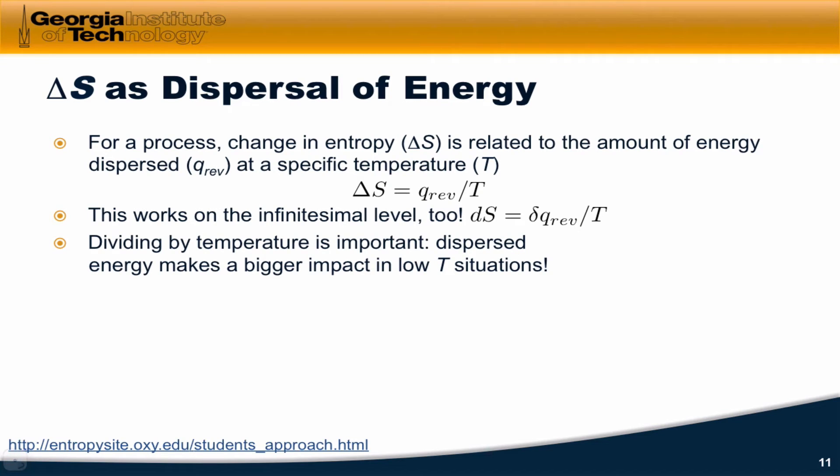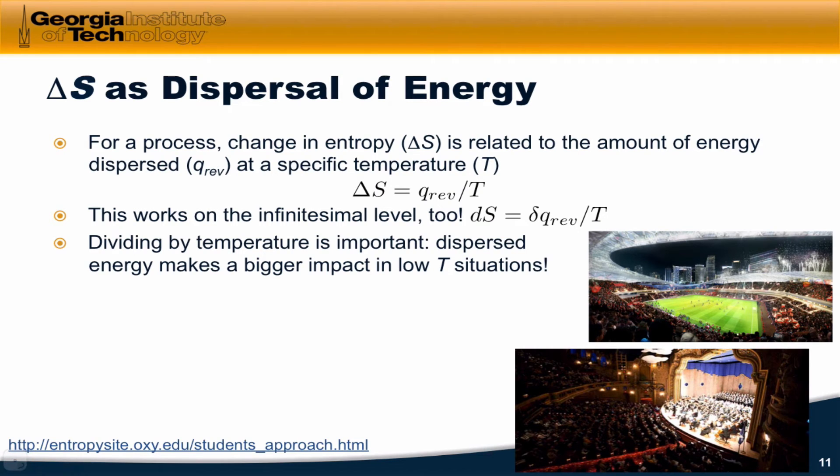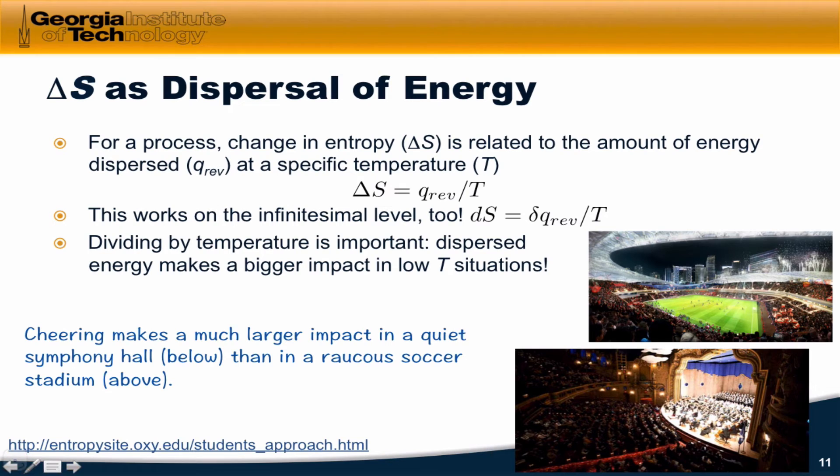Here's an analogy that can help us understand this idea. Consider a soccer stadium versus a symphony hall. The soccer stadium is very loud and raucous. The symphony hall, very quiet and subdued. Think about the impact that loud cheering makes in both situations. Loud cheering makes a much larger impact in a quiet symphony hall than in a raucous soccer stadium. If the level of cheering is the same, it's going to have a much bigger impact in the quieter symphony hall than it will have in the loud and already raucous soccer arena. This is why we divide by temperature. The soccer stadium is like a high temperature system for which energy dispersal doesn't have much of an impact. So ΔS is relatively low. But in a quiet symphony hall, a low temperature environment, the same amount of energy dispersed is going to have a large impact and ΔS will be large.